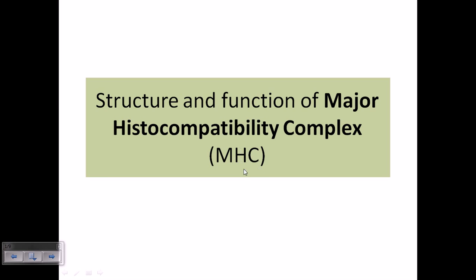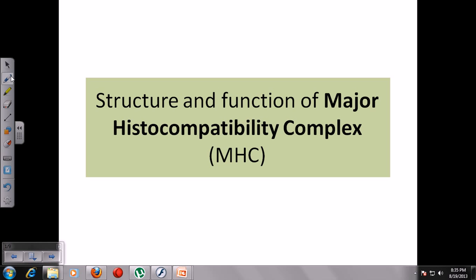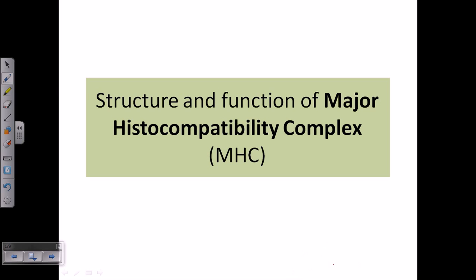Cells and tissues have particular sets of regions inside them which determine this region of specificity. Those complex structures inside the cells are called Major Histocompatibility Complex. There are two different types of MHC found in cells: one is Class 1 type and another is Class 2 type.